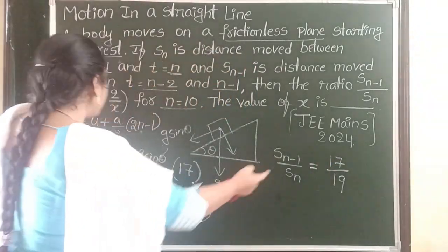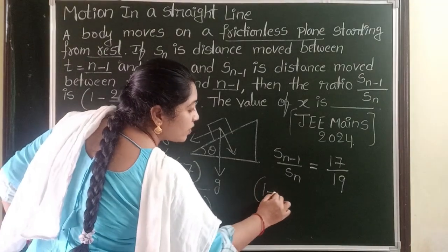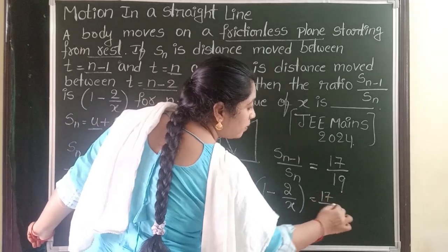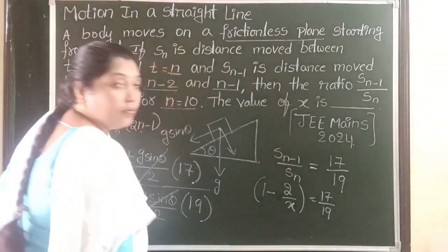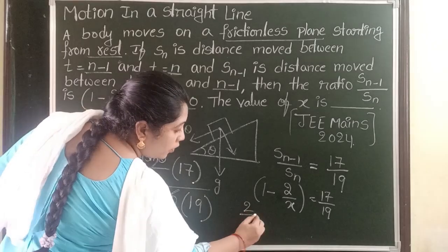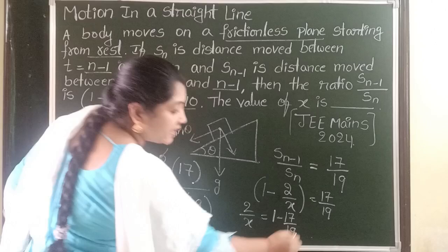The given ratio is 1 minus 2 by X. Substitute here. 1 minus 2 by X equals 17 by 19. We want to find out the value of X. Simplify this: 2 by X equals 1 minus 17 by 19.